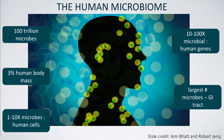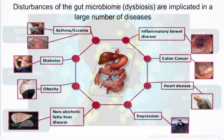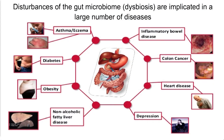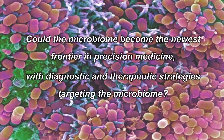What is the microbiome? Well, we know that within our bodies there are over 100 trillion microbes that coexist with us. They actually outnumber our own normal human cells by up to 10 to 1, and the largest proportion reside in the gut. We know that disturbances of the gut microbiome — something called dysbiosis — are implicated in a large number of diseases ranging from asthma, inflammatory bowel disease, heart disease, depression, and even obesity. I pose the question: could the microbiome actually become the newest frontier in precision medicine, with diagnostic and therapeutic strategies that target the microbiome?